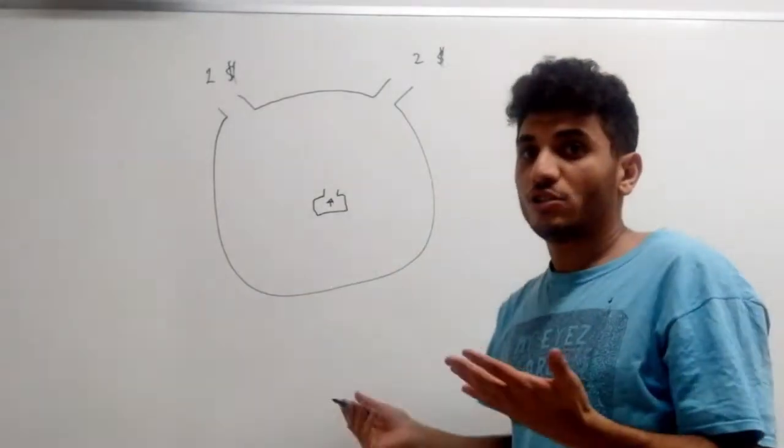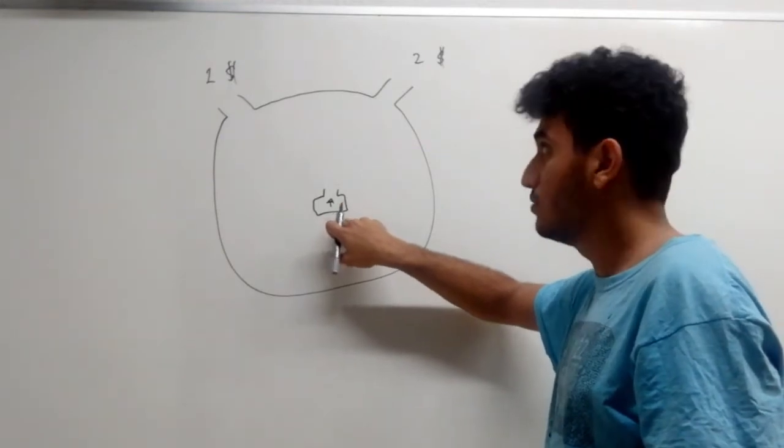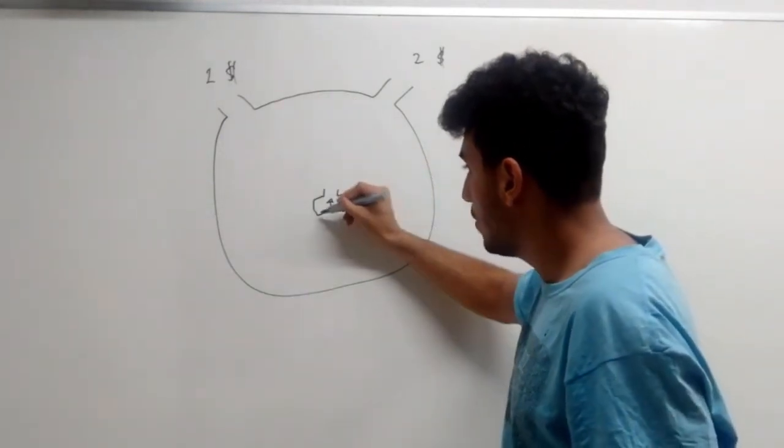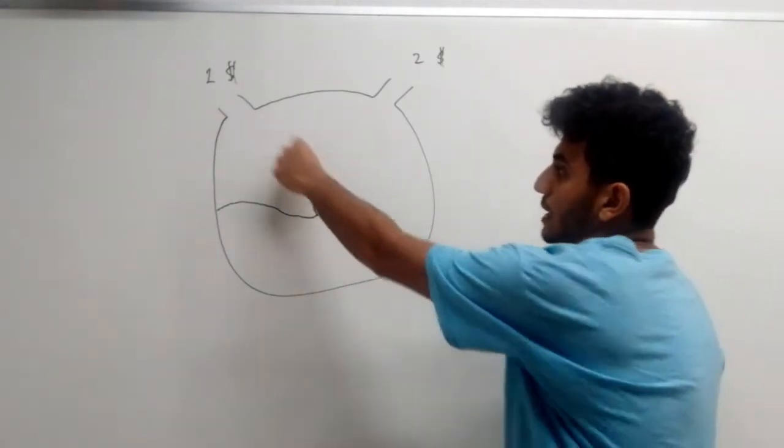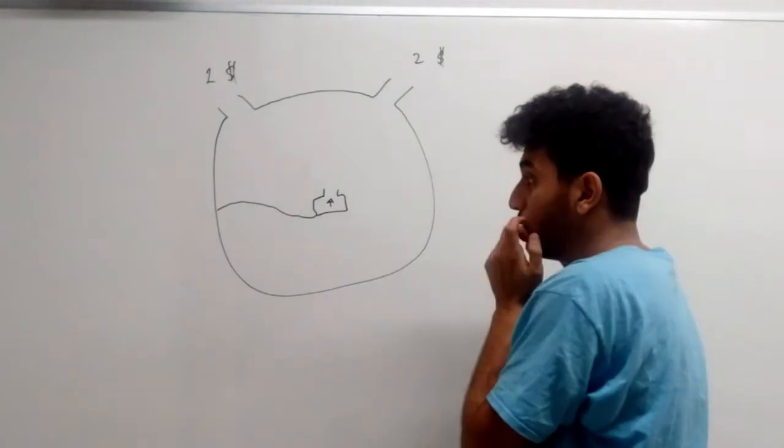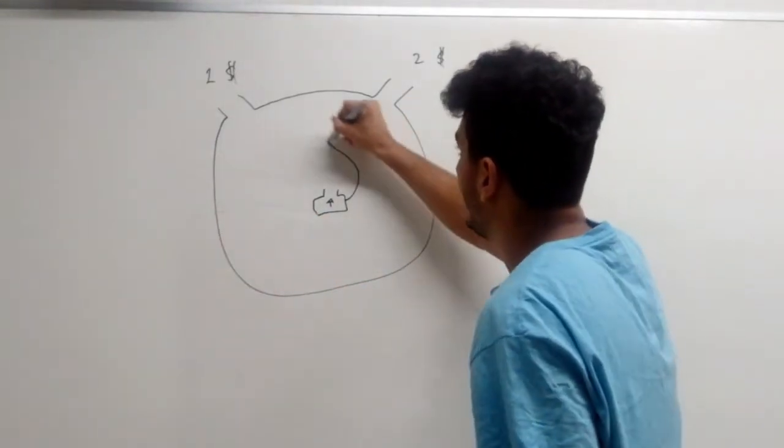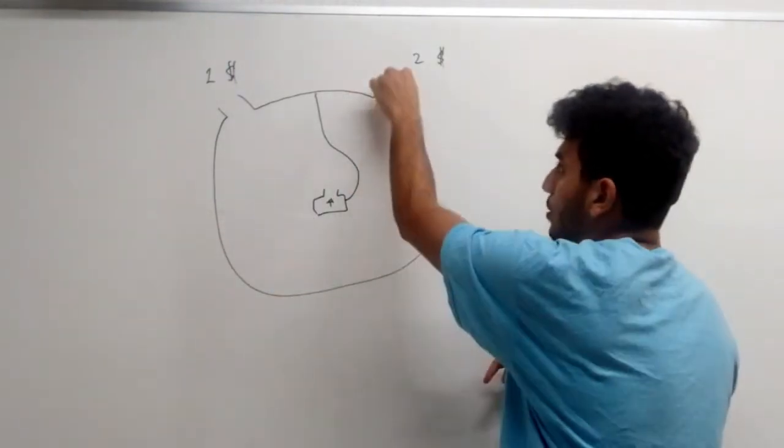This is actually really simple. As long as one line from the entrance touches any line of the exits, we will have one unique solution. So if we connect it over here, we have a unique solution to both of them. And if we had connected it over here, we'd have a unique solution to both of them.